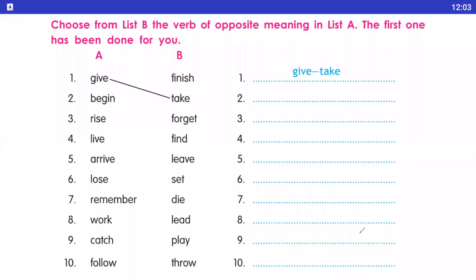Now exercise number three: choose from list B the verb of opposite meaning to list A. The first one has been done for you. A and B column bana ke, thumb point ko match karna hai. First is give — give ka opposite hai take.